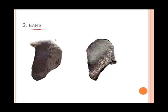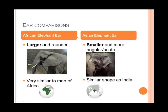The ear shape is another huge difference. If you look at the ear comparisons, the African elephant's ear is relatively larger and rounder, whereas the Asian elephant has a more acute and angular ear. One reason for this is that the African elephant lives way closer to the equator than its Asiatic cousin — it is relatively warmer in Africa than in Asia, and therefore the African elephant needs a larger ear to cool off.